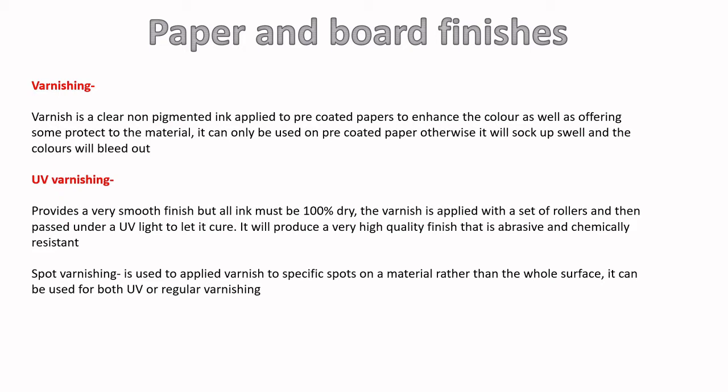Varnishing will come up for pretty much every material we go through. It is a clear, non-pigmented coating applied to the surface to enhance color and offer protection. For paper, it must only be done on pre-coated papers — if the paper isn't pre-coated, the ink will soak up the varnish, swell, and the color will bleed out. UV varnishing provides a completely smooth finish, applied by rollers, and won't dry until placed under UV light.